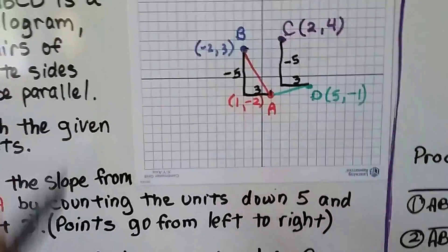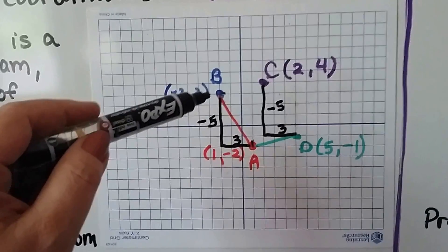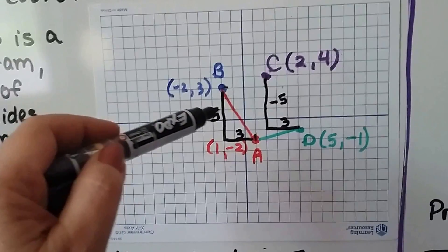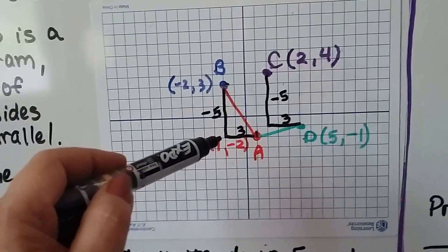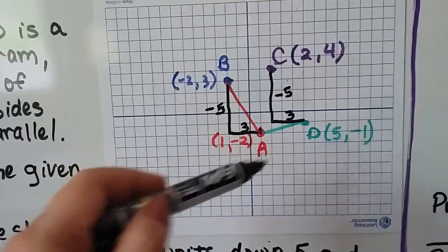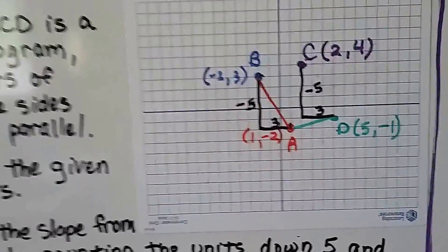So the points go from left to right. So B is farther to the left, so it's first. That's going to be our x sub 1, y sub 1. And we count down 1, 2, 3, 4, 5. So that's a negative 5. And then we count over to the right 3: 1, 2, 3. So our rise is a negative 5, and our run is a 3 to get to point A.